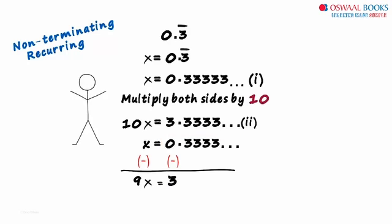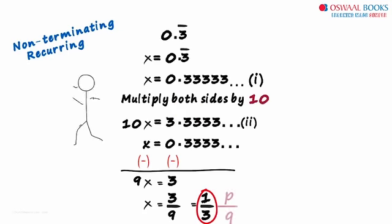We finally manage to eliminate the recurring decimal. We have just 3 on the right hand side now. Transposing 9 to the right hand side, we get x equal to 3 by 9 which equals 1 by 3. Here we converted our recurring decimal to the rational number form p by q.